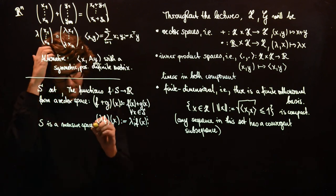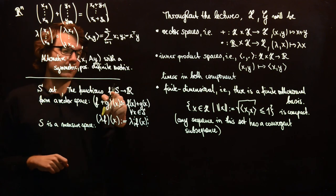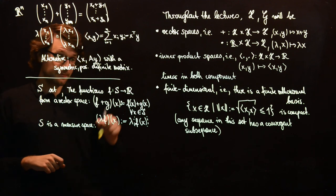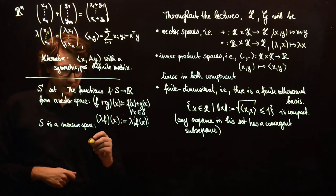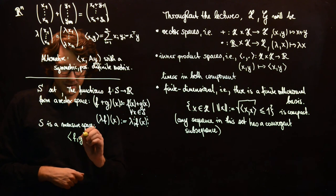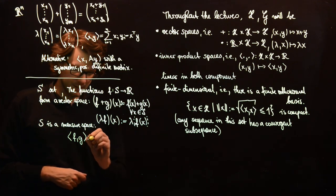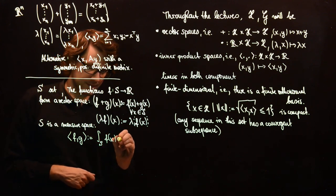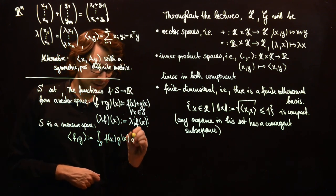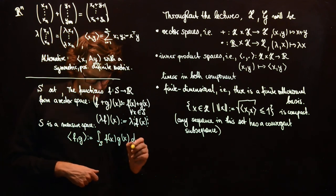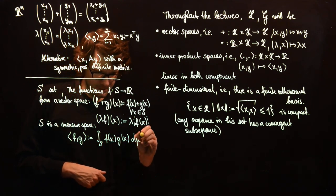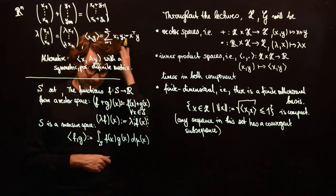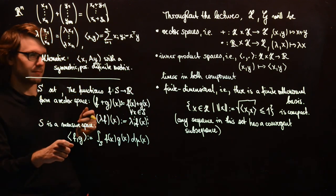Then you can take the integral over a function on S. So then the inner product of F and G should be defined as the integral over S of F of X times G of X. And here we take the integral over S with the measure mu on the space S.